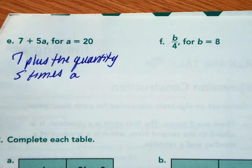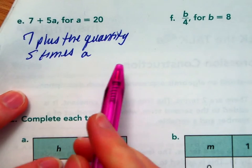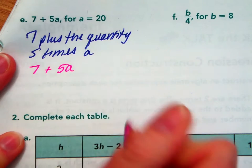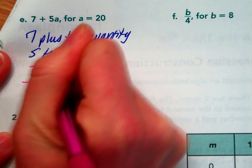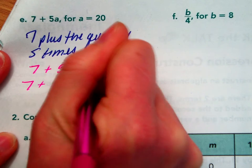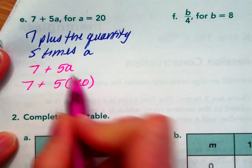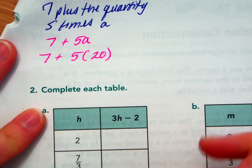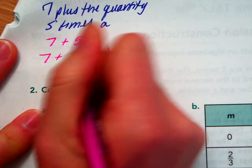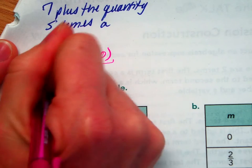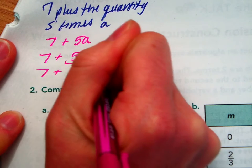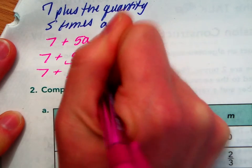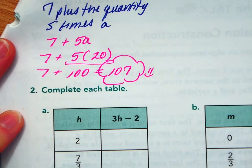All right, how do we evaluate that? We replace A with the number 20. I start out as 7 plus 5A. Here's A. 7 plus 5 times 20. Check that out. You just replace it. Now, you still got to use your order of operations. So what are you going to do next? Ah, yes. This. 7 plus 100? 107. Happy, happy, happy, happy, happy, happy. Hope you got that one right.